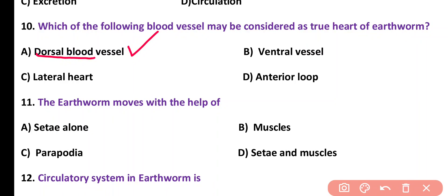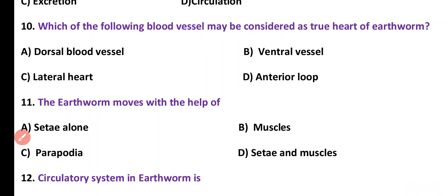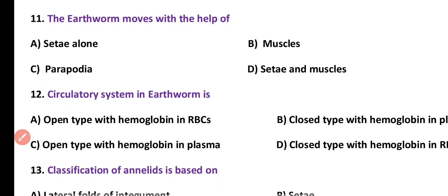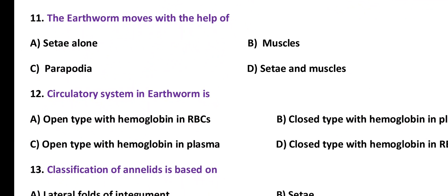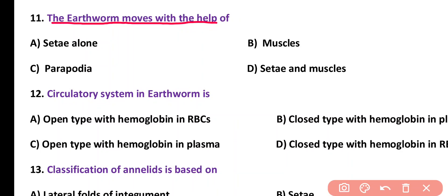Dorsal blood vessel of earthworm is considered as the true heart. Question number 11. The earthworm moves with the help of: setae, muscles, parapodia, or setae and muscles. Correct answer is option D.